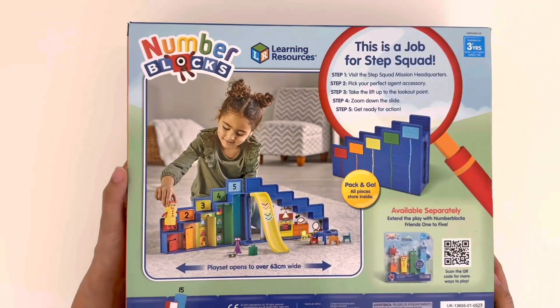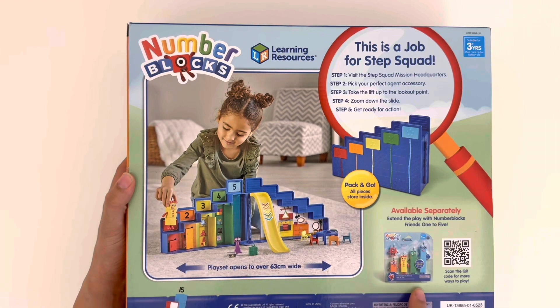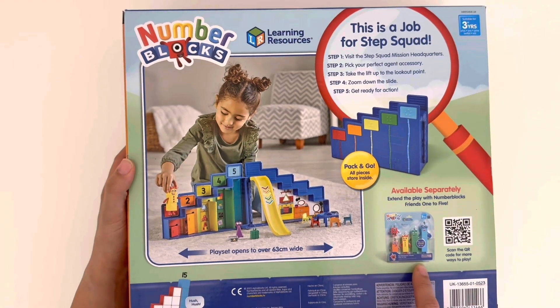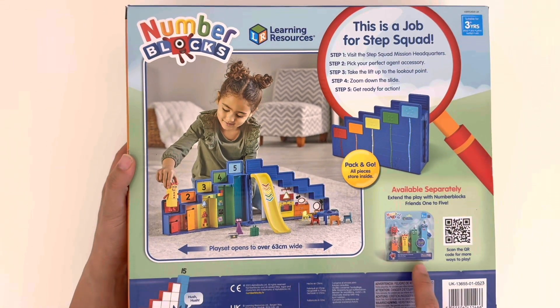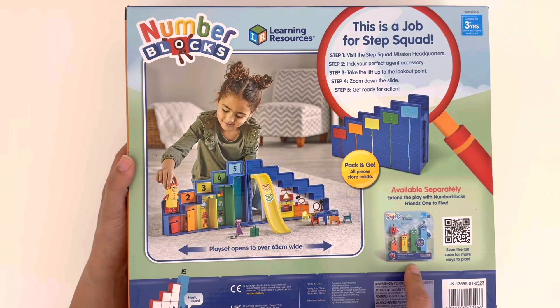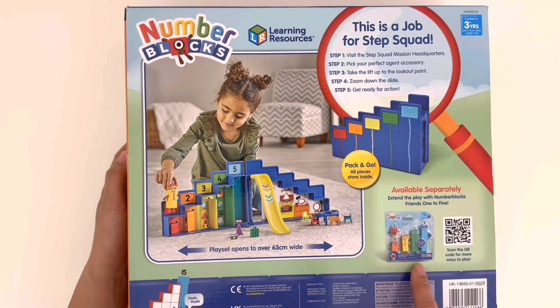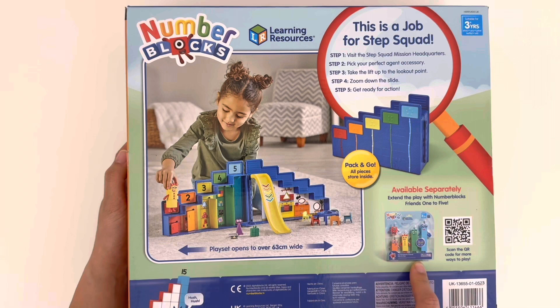Let's take a look at the back of the box. We can see the other toys we can collect to play with this set. It's the Number Blocks 1 to 5 friends. You can see me unboxing this toy on another episode. I'll include the link in the video description below.